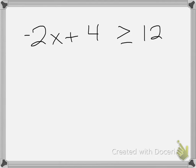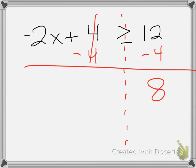Last one. Quickly, draw a wall. Whatever I do to one side, I do to the other. That makes 8, that cancels. Negative 2x here, greater than or equal to 8.